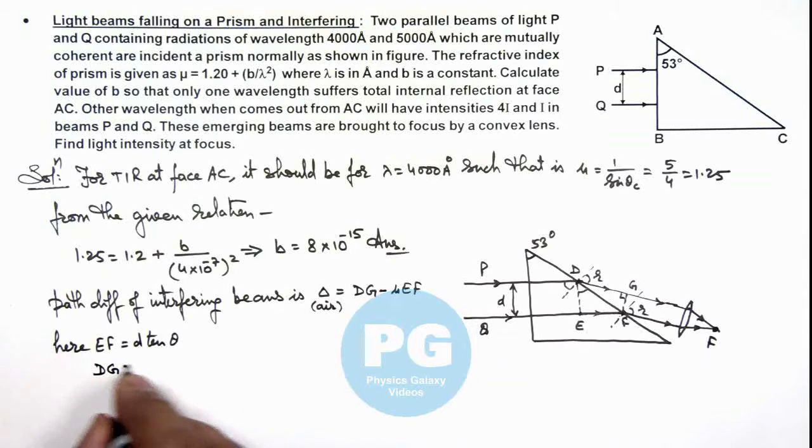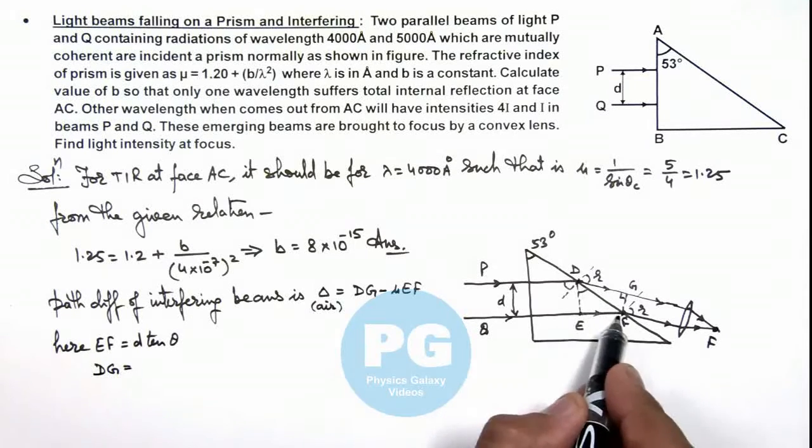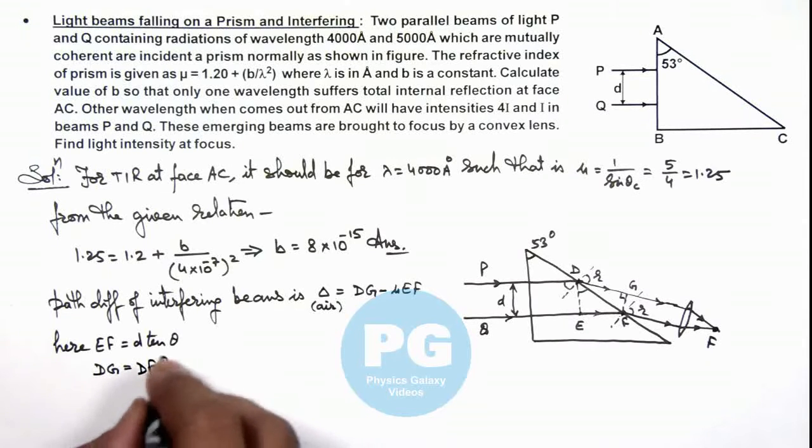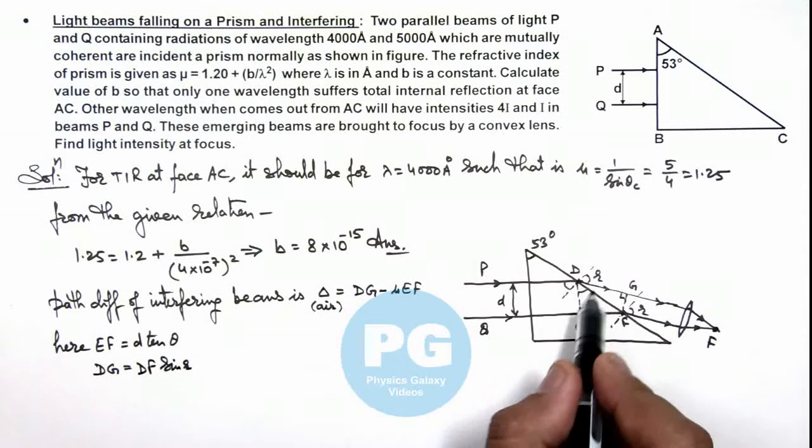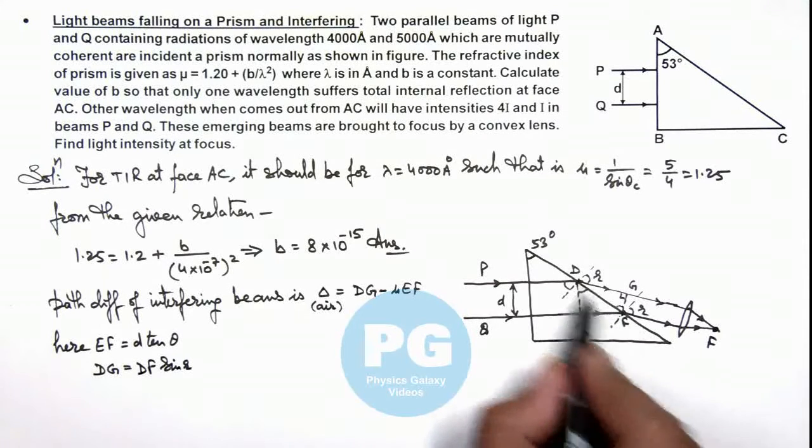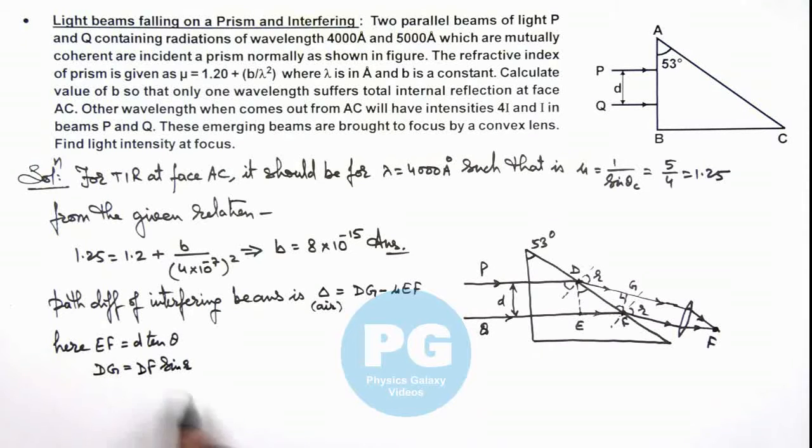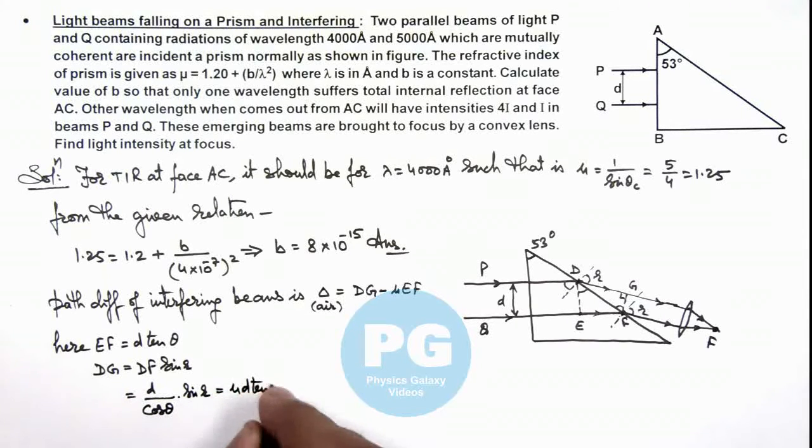Because if this angle is r here, you can see this will also be r, and this is DF sin r. Now if we substitute the value of DF which is d by cos θ, here you can see the value of DF will be small d by cos θ multiplied by sin r. And sin r we can substitute as μ sin θ, so this will be equal to μd tan θ, which is the value of DG.